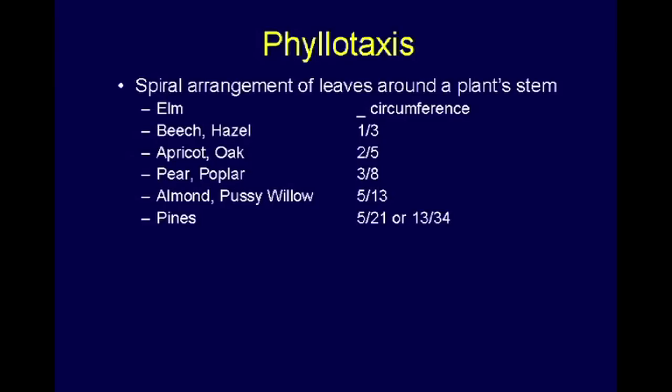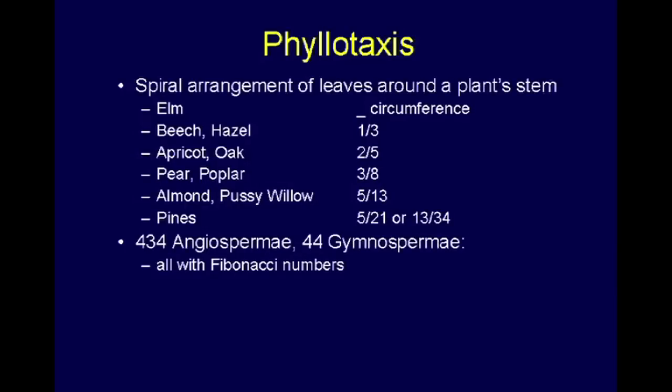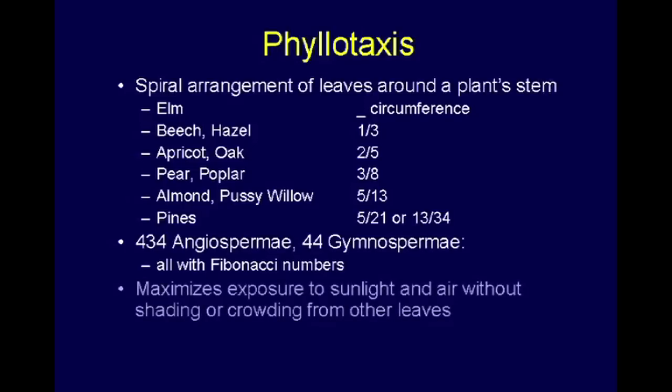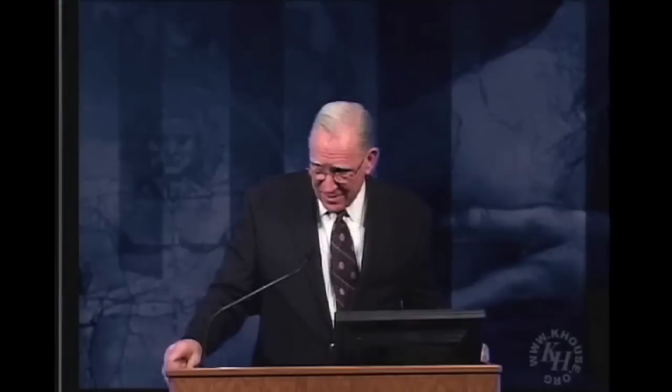There's a study among scientists called phyllotaxis, where you study the arrangement of leaves around the stem of a plant. It turns out the elm always has one-half the circumference, the beech or hazel has one-third, the apricot and oak have two every five, the pear and poplar have three-eighths. The almond, pussy willow, and pine trees are always five to 21 or 13 to 34. These are all Fibonacci numbers. Out of 434 angiosperms and 44 gymnosperms studied, they all have Fibonacci numbers in their design. Scientists discovered this maximizes exposure to sunlight and air without shading or crowding from other leaves.